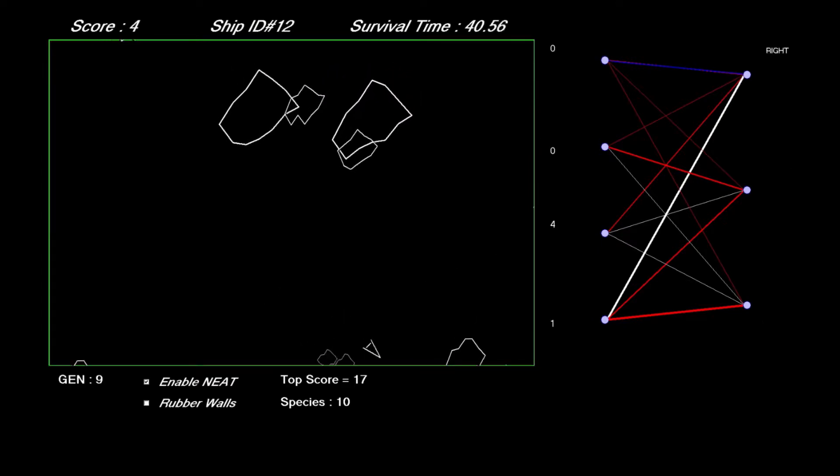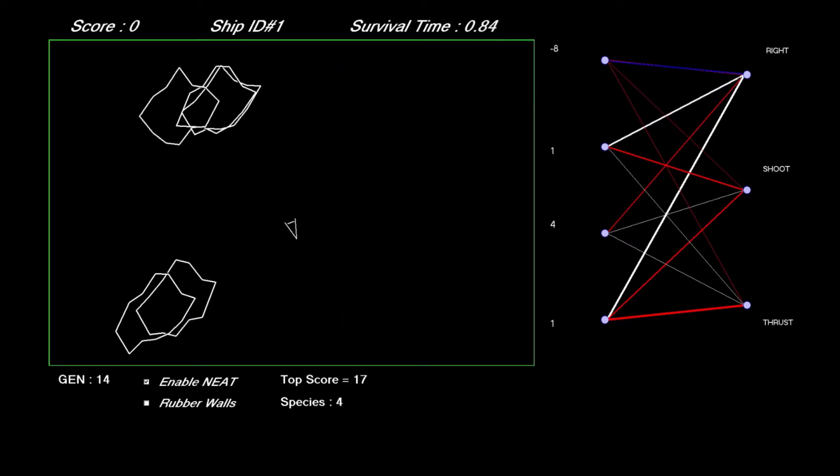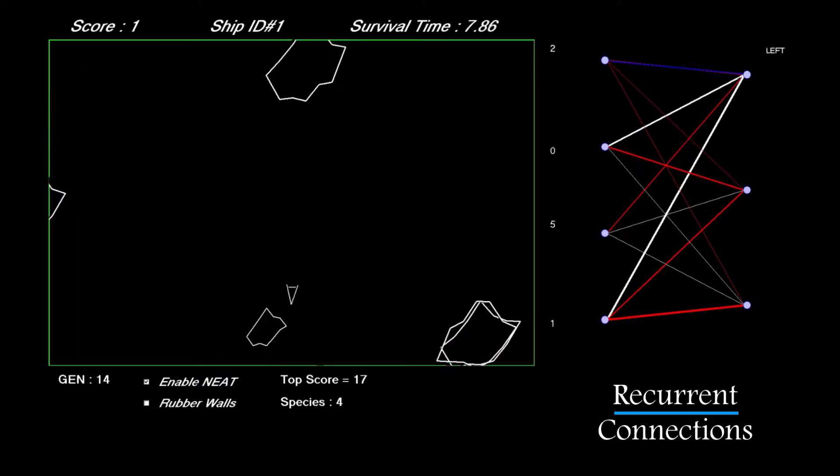I'll talk more about those conditions later. If I want to exclude recurrent connections, I simply block them at this add connection stage. So the asteroid solution that we're looking at here is exactly the same as in previous videos except we have recurrent connections switched on.